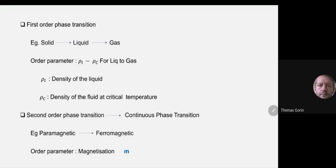For the second order phase transition, del² F / del T² diverges while del F / del T remains continuous. For the first order phase transition, del F / del T itself diverges. For each phase transition, we define a new thermodynamic quantity called the order parameter. This is separate from free energy: in the ordered state, the order parameter is close to one (after normalization); in the disordered phase, it is close to zero.